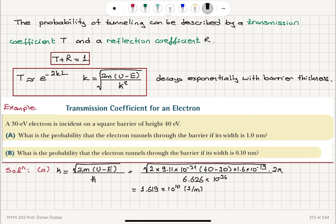K is, remember, 2 pi over lambda, so it has units of 1 over meter. The transmission coefficient T can be estimated to be exponential of minus 2kL, where L is the width of the barrier.